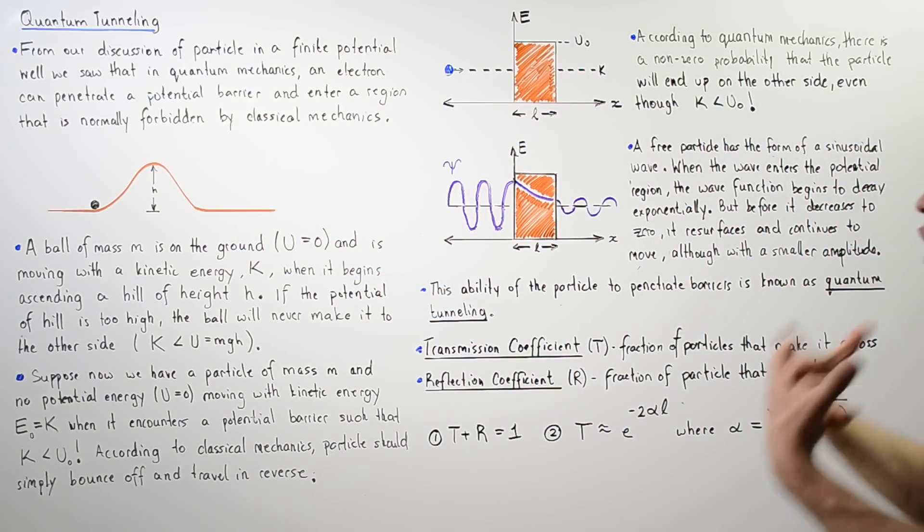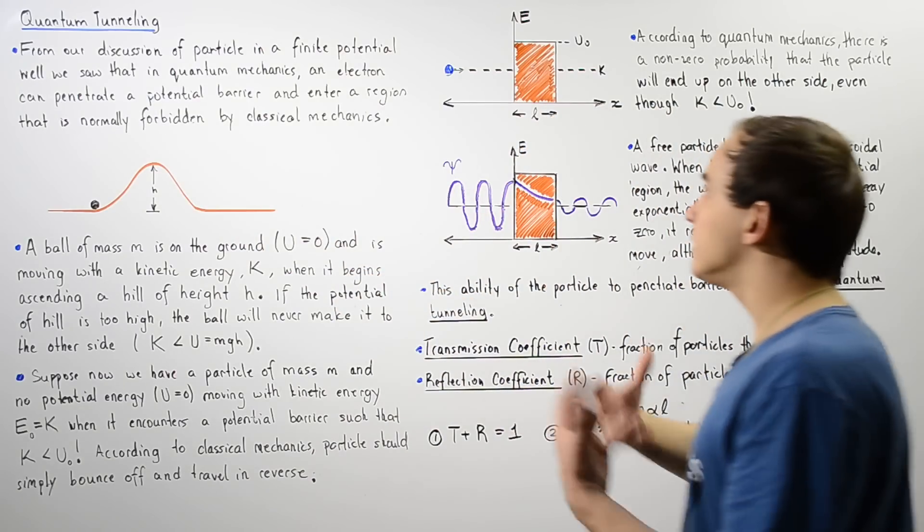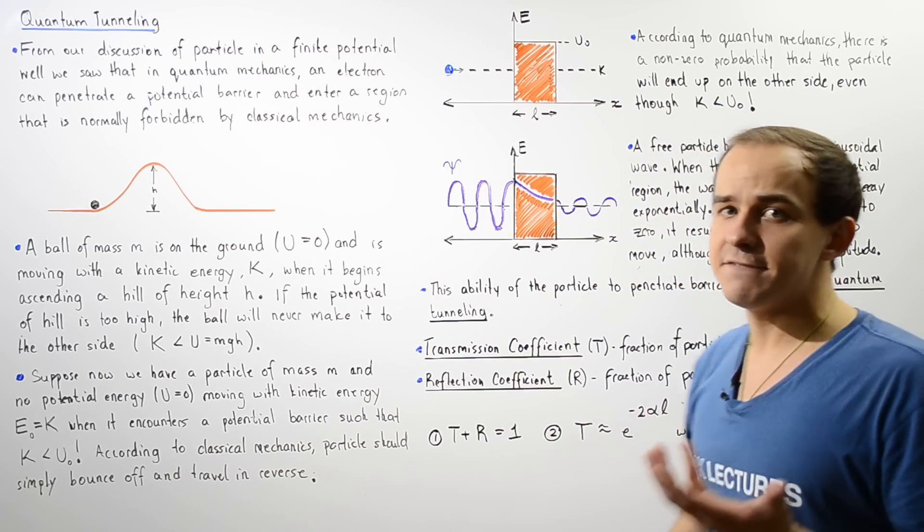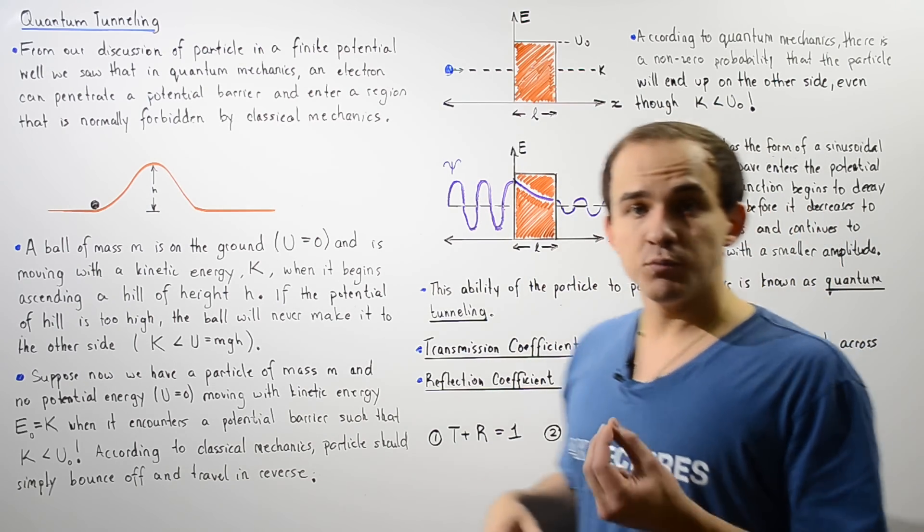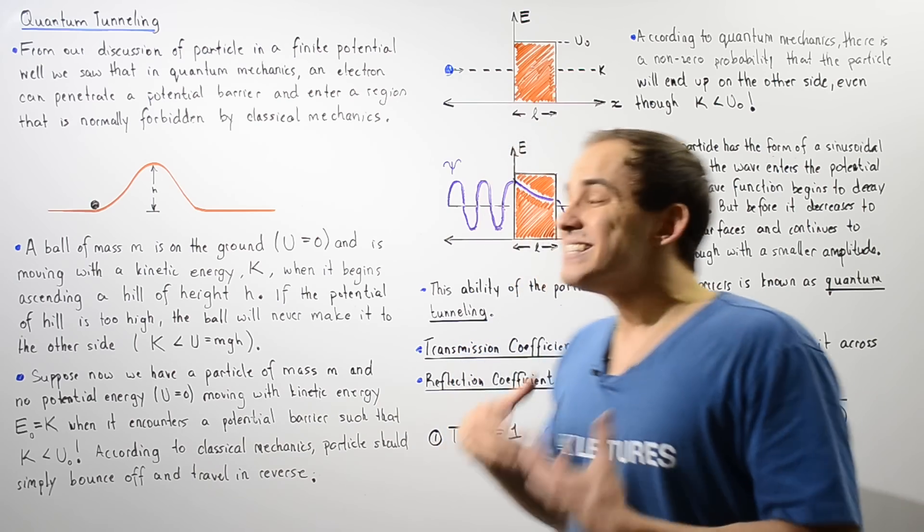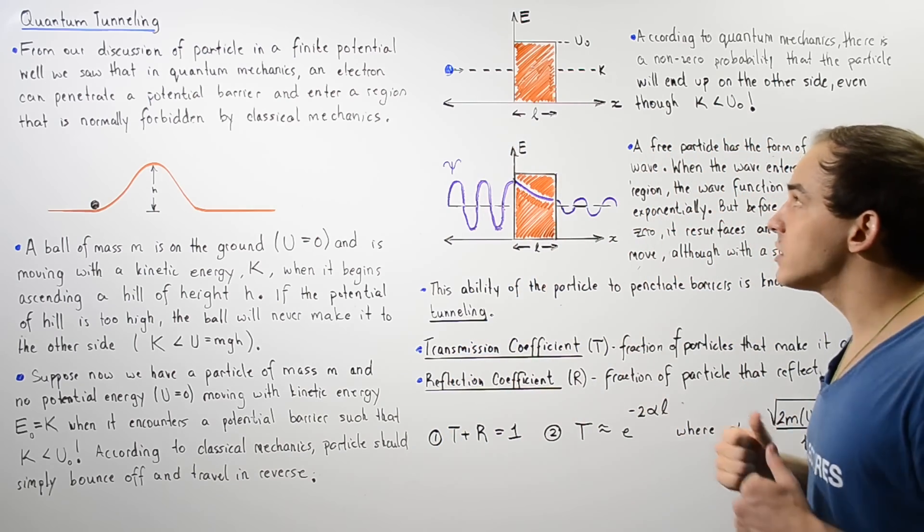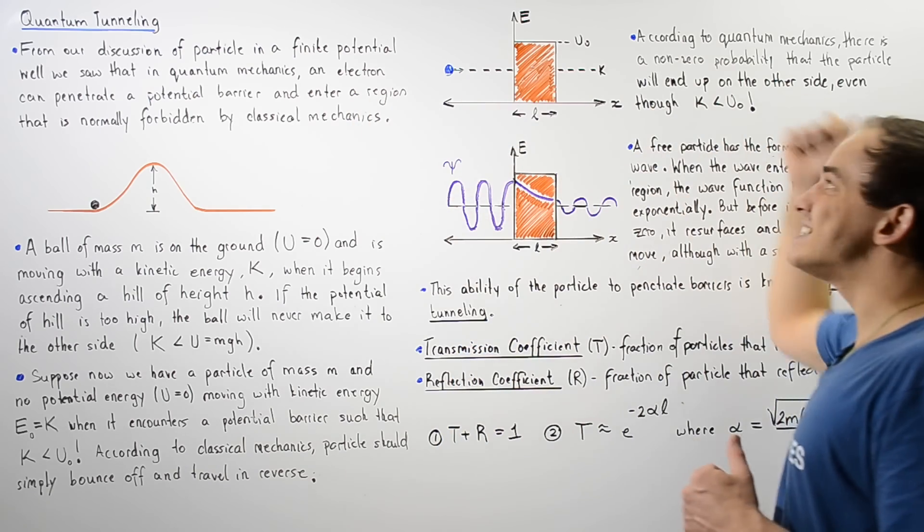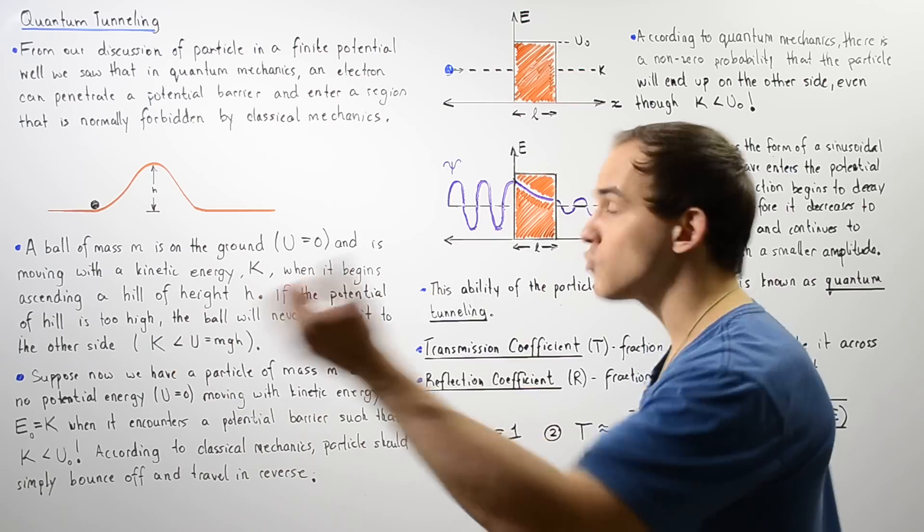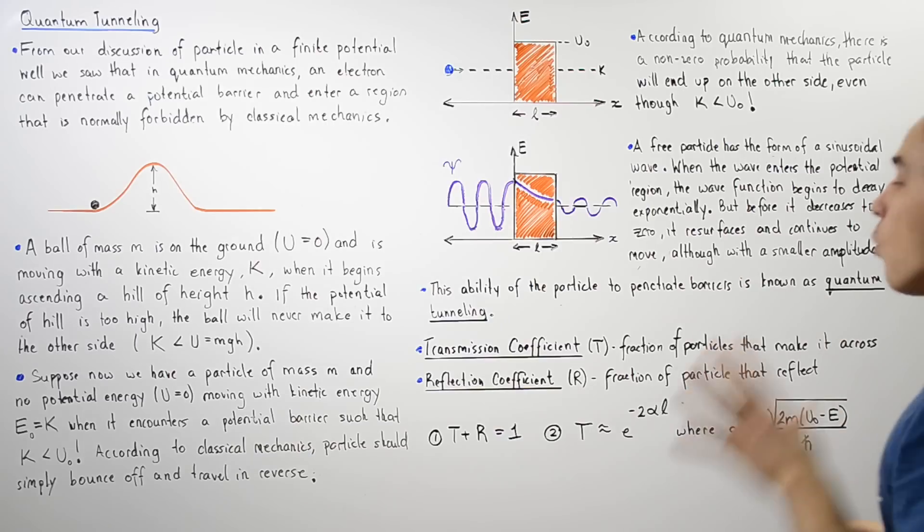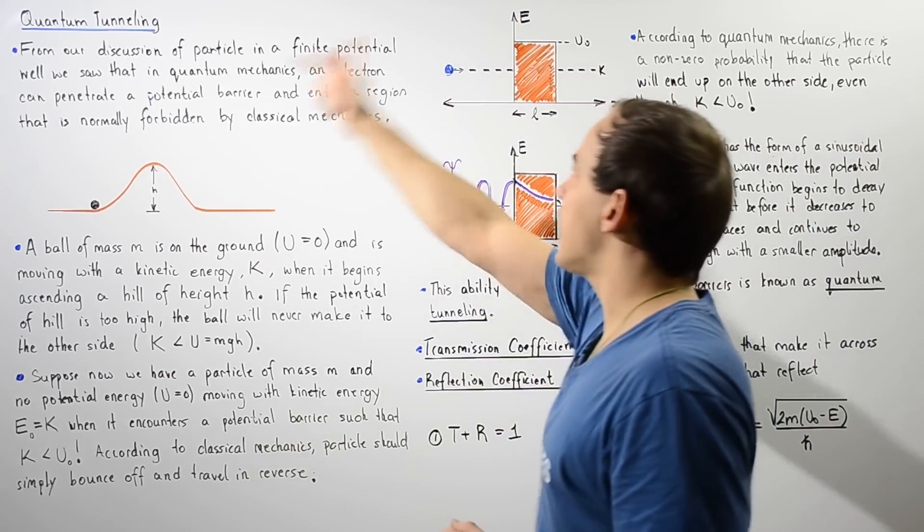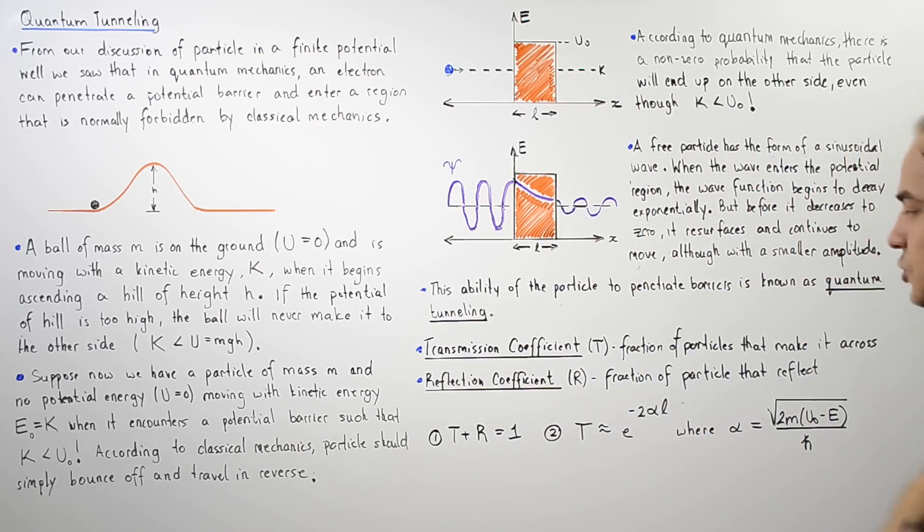For example, if the total number of particles that collide with our barrier is given by a hundred, and our transmission coefficient is 0.1, then that means 10% of those particles will be transmitted. So 10 of those 100 particles will actually transmit themselves, while 90 will reflect and bounce back.